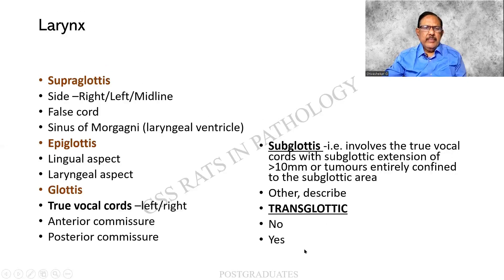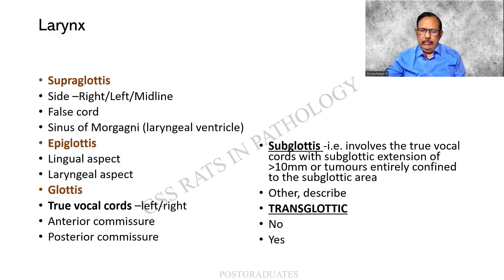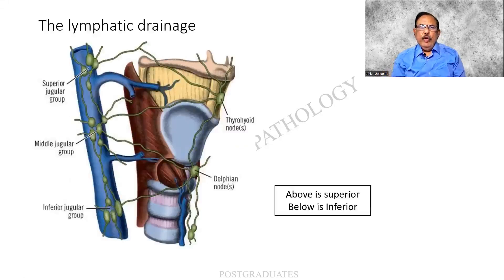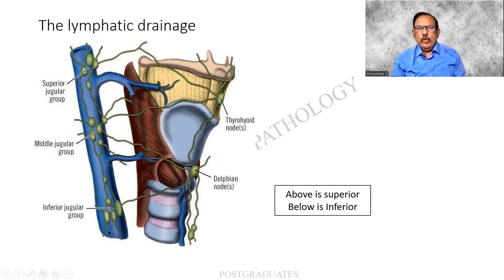Transglottic involvement — whether this is applicable or not — I am repeatedly reading this because it will unravel the complex nature of the sample we are going to study. Before proceeding, let me complete the lymphatic drainage. There is the vocal cord; if the drainage is above that region it is the superior jugular group, and if it is below that, it is the inferior jugular group.